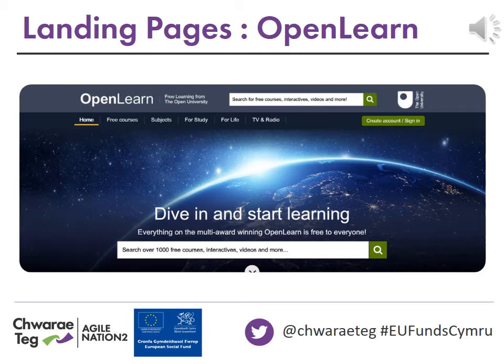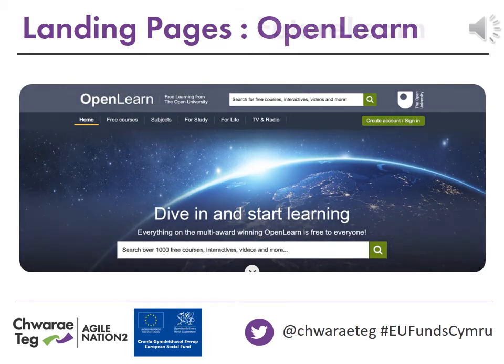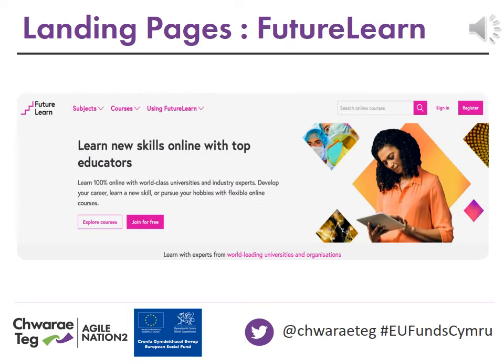You can see on this OpenLearn page that there are options to click, for example, on a tab about free courses so that you can just find out the free courses, or you can simply type into the search box what you're looking for. On FutureLearn, you have a search option and tabs relating to subjects and courses. In addition, if you click on the 'Using FutureLearn' tab at the top, you can navigate to a section called 'How does it work?' which explains the best way to get the most from their website and courses.